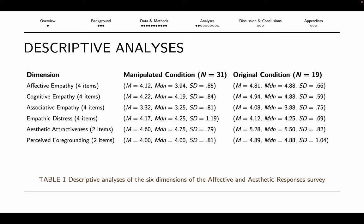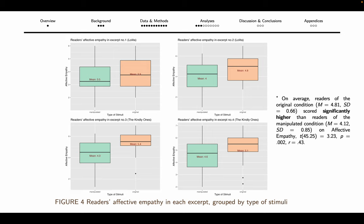The following slides show graphic representations of scores for each dimension. In each plot, on the left side you will see responses to the manipulated texts, and on the right side the responses to the original excerpts. As for affective empathy, on average, readers of the original condition scored higher than readers of the manipulated condition, meaning they felt more emotionally connected to the character — especially in excerpt 3 from The Kindly Ones. Since the data for affective empathy were normally distributed with homogeneity of variance, I ran an independent t-test to assess differences between conditions. The t-test shows a significant difference between conditions in terms of affective empathy, with a medium-large effect size of 0.43.